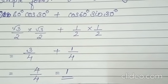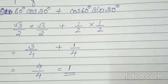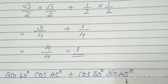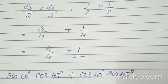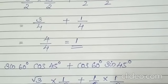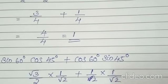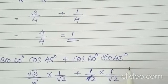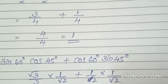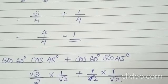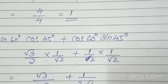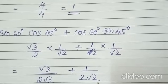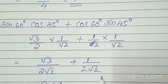The second question is: sin 60 degree cos 45 degree plus cos 60 degree sin 45 degree. We substitute the values: sin 60 degree is root 3 by 2, into cos 45 degree which is 1 by root 2; plus cos 60 degree which is 1 by 2, into sin 45 degree which is 1 by root 2. So root 3 into 1 gives root 3, and 2 into root 2 gives 2 root 2. For the second term, 1 into 1 gives 1, and 2 into root 2 gives 2 root 2. The denominators are the same: 2 root 2.